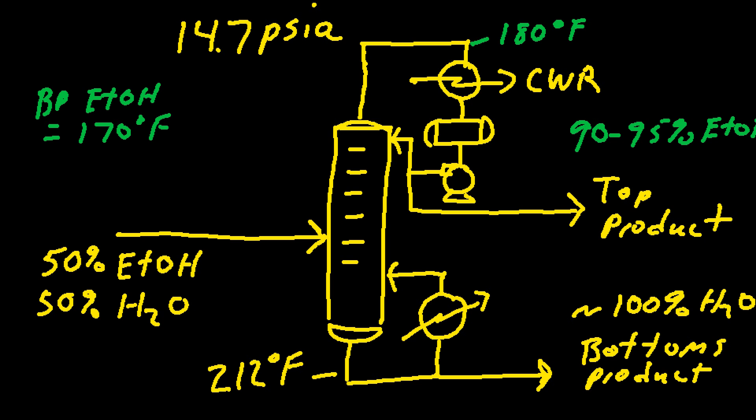So that's binary distillation in a nutshell. To summarize we have a feed that comes in that has a mixture of at least two materials. In the simplest case exactly two. In this case ethanol and water. It goes into a distillation column with a number of trays.